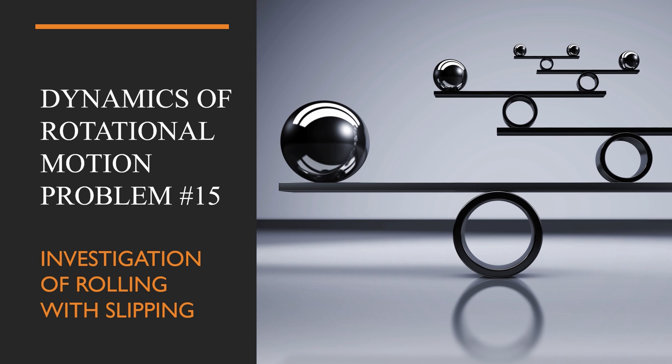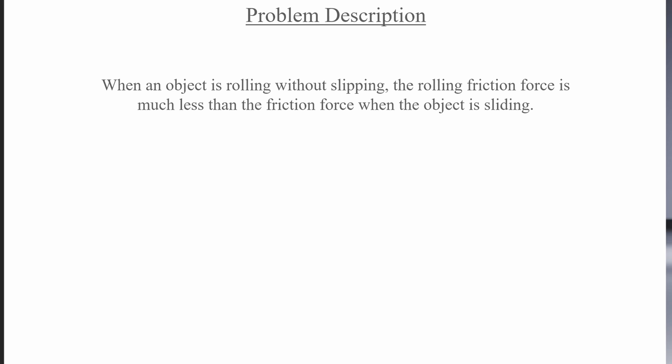Hey everyone, good morning. This will be the last video in the Rotational Dynamics chapter, so let's do a problem that covers the topic of rolling with slipping. It starts off by talking about the difference in strength between rolling friction and kinetic friction when an object rolls without slipping.